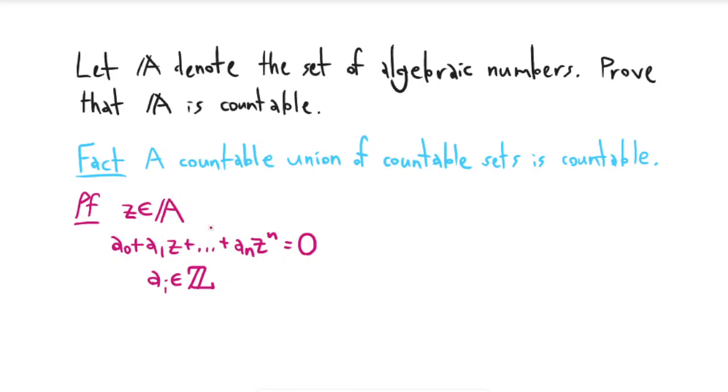We want to use this to prove that A is countable. So we're going to define the following set. For a non-negative integer n, we're going to define P_N. This is going to be the set of all polynomials, again with integer coefficients, with the property that n plus the absolute values of all of the coefficients is equal to big N.